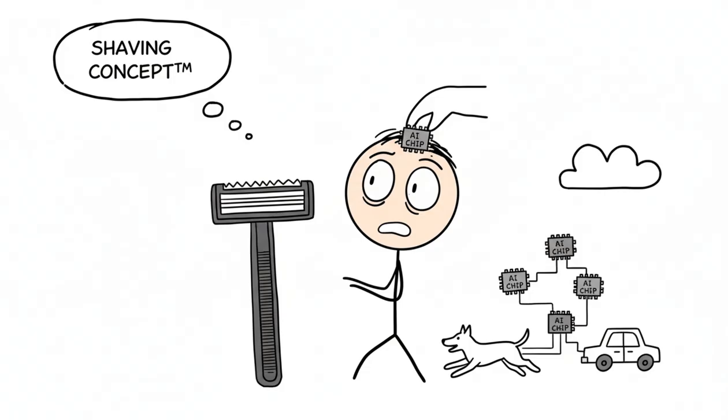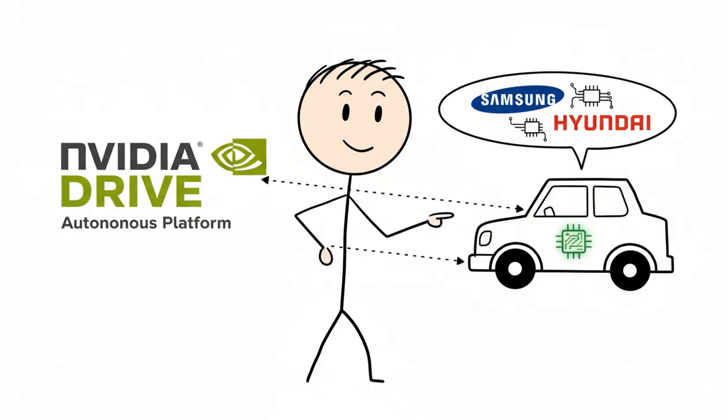They don't just sell you the razor, they own the entire concept of shaving. And if that wasn't enough, they're shoving their AI chips into everything that moves. They're deepening their partnerships with Samsung and Hyundai to power the next generation of autonomous vehicles with their NVIDIA Drive platform.